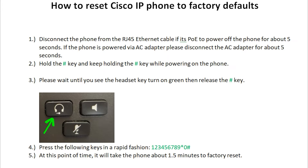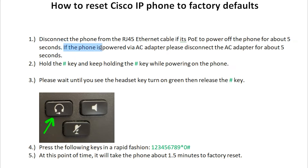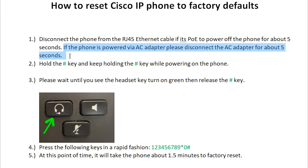We want to start off by powering off the phone. We'll go ahead and unplug the RJ45 Ethernet cable if the phone is PoE-powered, for about five seconds. If the phone is powered via AC adapter, then we're going to disconnect the AC adapter for five seconds.